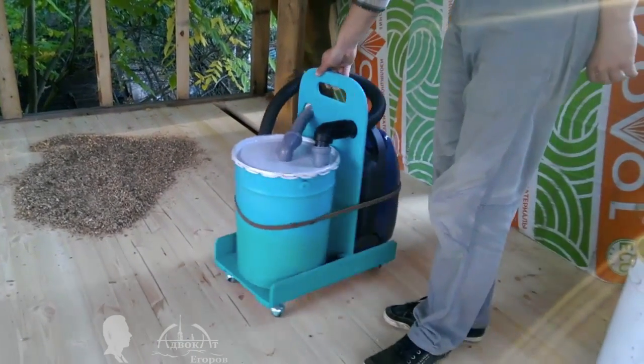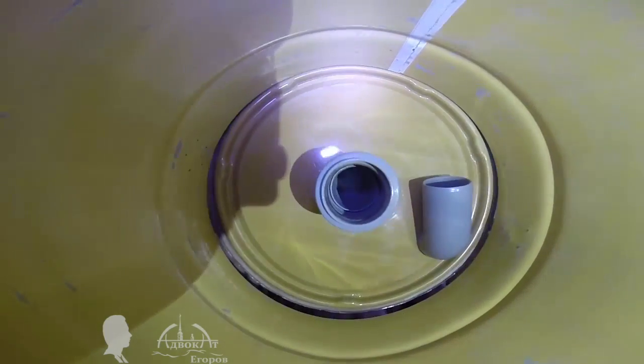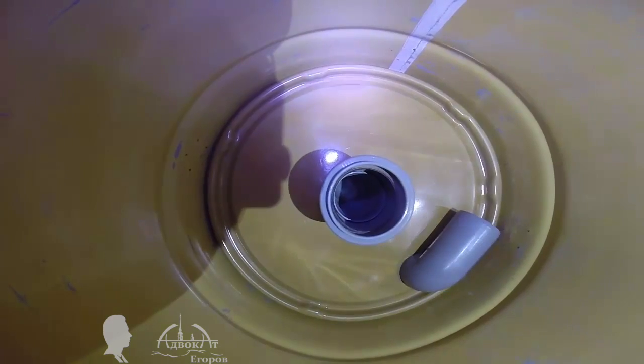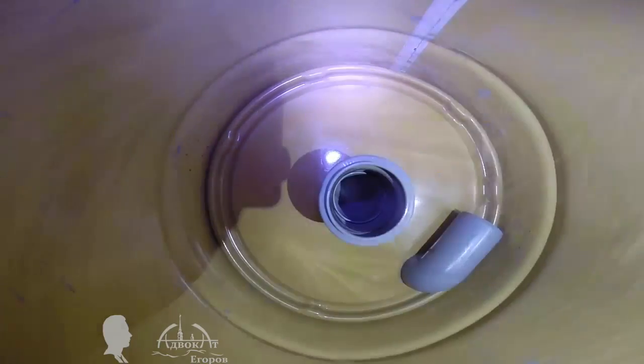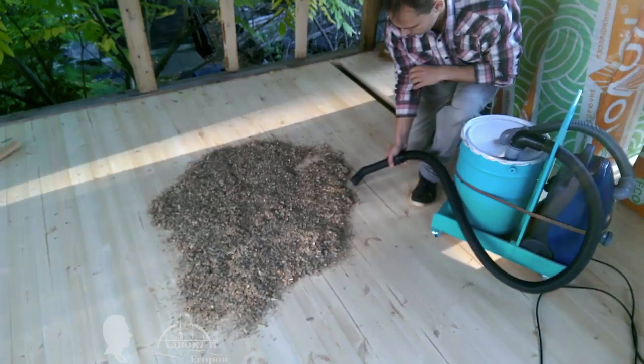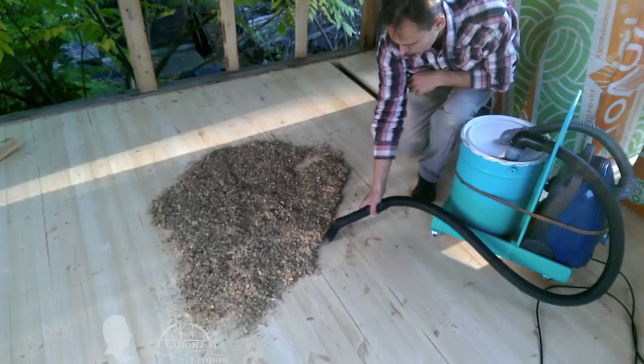This video is about how to make a fully functional cyclone separator from a bucket and two plastic elbow fittings. If you use a small vacuum cleaner in your workshop or for your home improvement projects, you will have to frequently interrupt your work to empty its dust container.